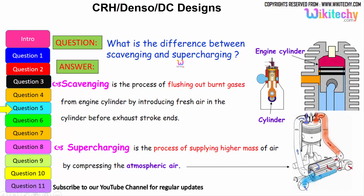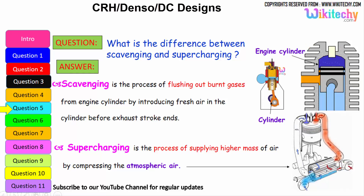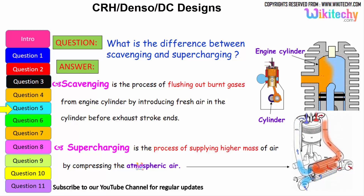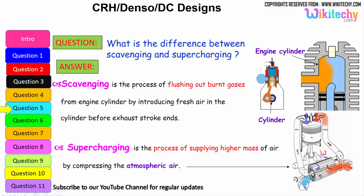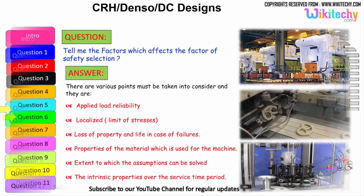What is the difference between scavenging and supercharging? Scavenging is the process of flushing out the burnt gases from the engine cylinder by introducing fresh air before the exhaust stroke ends. Supercharging is the process of supplying high-density masses of air by compressing above atmospheric pressure — high-pressure air is injected into the cylinder.